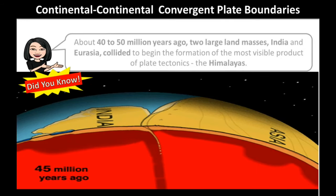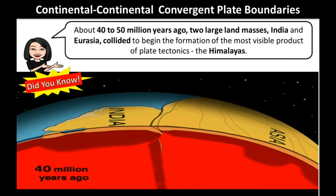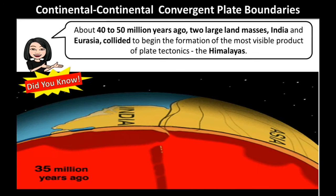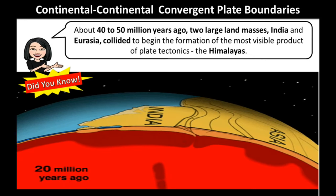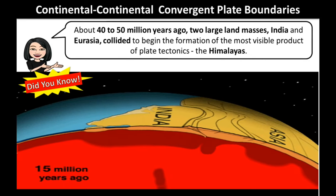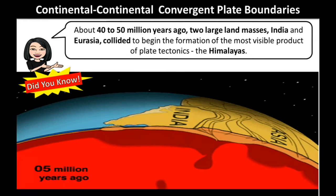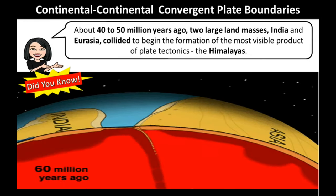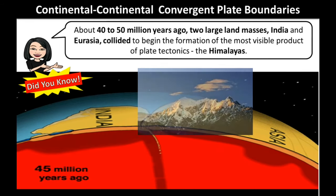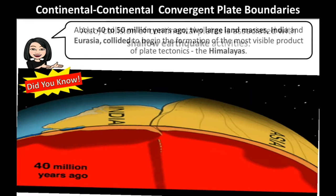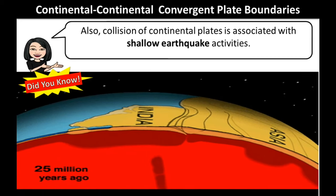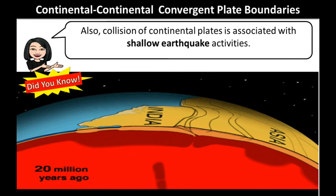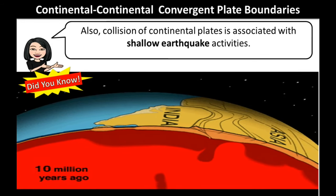Did you know? About 40 to 50 million years ago, two large land masses, India and Eurasia, collided to begin the formation of the most visible product of plate tectonics, the Himalayas. Also, collision of continental plates is associated with shallow earthquake activities.